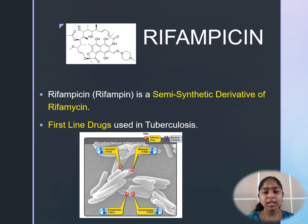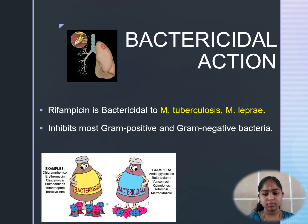Rifampicin is the first-line drug for tuberculosis. It has bactericidal action and is bactericidal to Mycobacterium tuberculosis, Mycobacterium leprae, and other atypical mycobacteria.